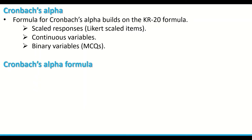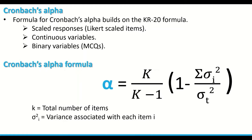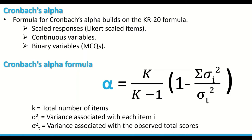The Cronbach's alpha formula is: alpha equals k divided by k minus 1, multiplied by 1 minus the sum of item variances divided by the variance of the total score. Here, k represents the total number of items, variance i represents the variance associated with each item, and variance t is the variance linked to the observed total score.